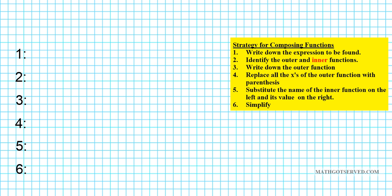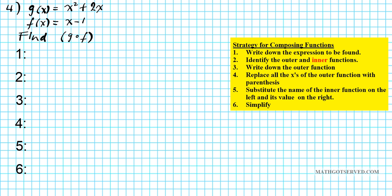Let's take a look at question number 4. For problem 4, what if we have two functions: g of x equals x squared plus 2x, and f of x equals x minus 1. What if we were to find g composed with f of x? Following our strategy, we'll first write down the expression to be found: g composed with f of x. The outer function here is g, and the inner function is f.